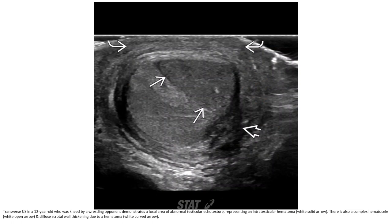Transverse ultrasound in a 12-year-old who was kneed by a wrestling opponent shows a focal area of the testicle that is hypoechoic, representing an intratesticular hematoma. There is also a complex hematocele and scrotal wall thickening due to hematoma.